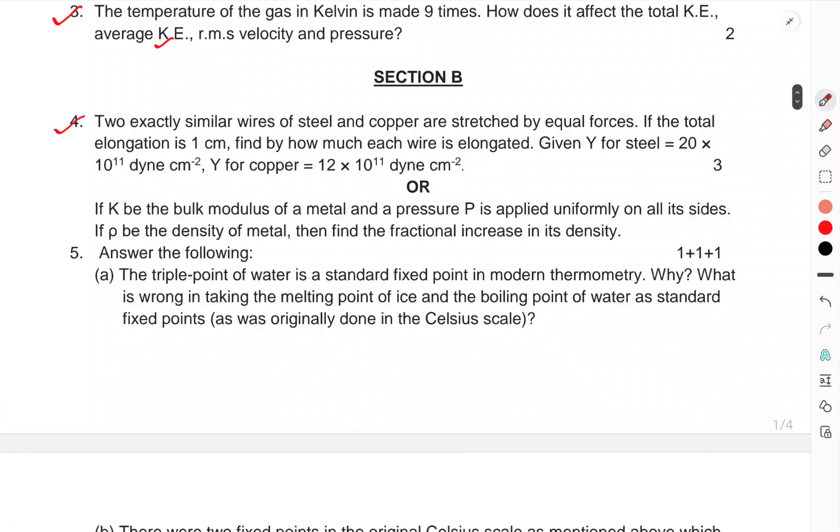Now, we have come to Section B. Two exactly similar wires of steel and copper are stretched by equal force. Total elongation is 1 cm. Find how much each wire is elongated. Given Y for steel is 20 × 10¹¹ dyne per cm². Y for copper is 12 × 10¹¹ dyne per cm².